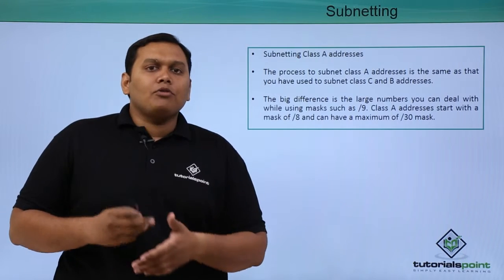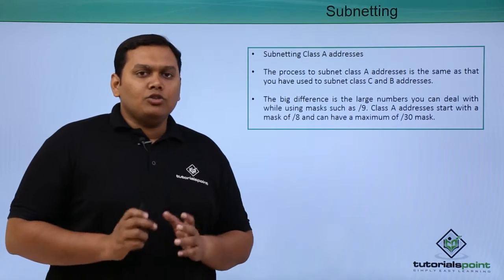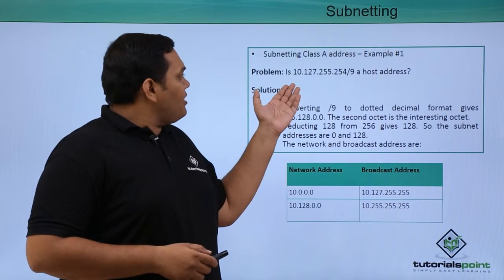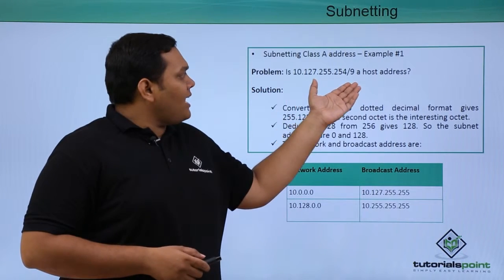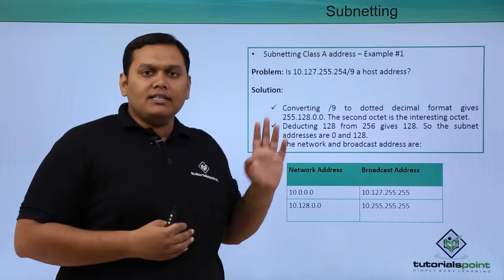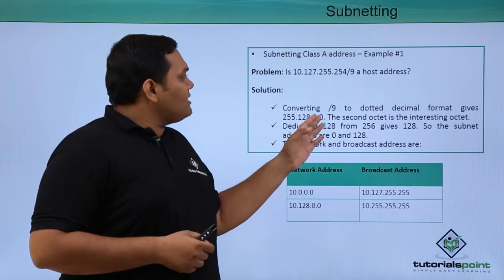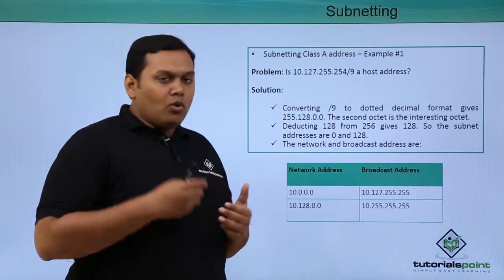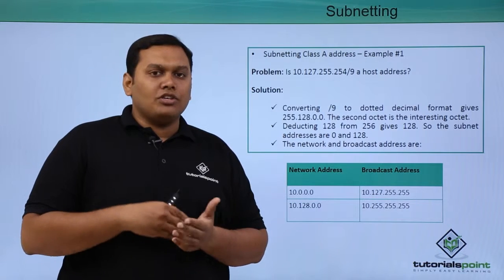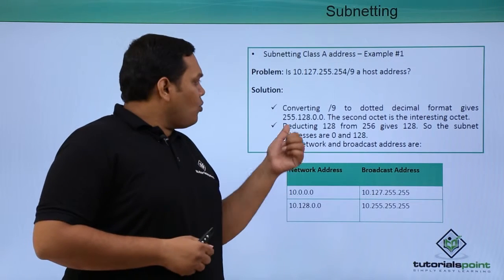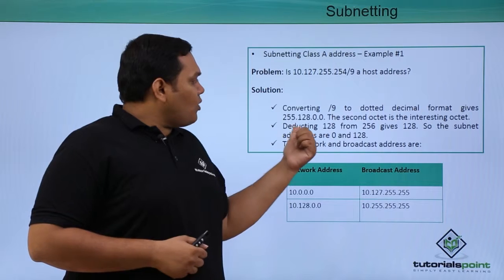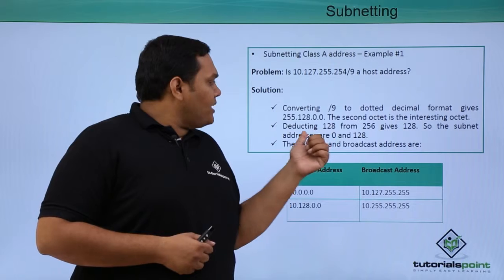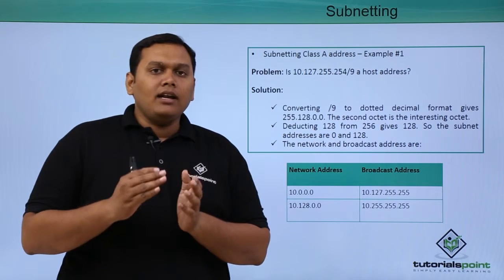You will have more host bits available. Let's see an example. Here you have been given this IP address with /9 as a host address, so we have to subnet this IP address. Converting /9 notation to dotted decimal format gives you 255.128.0.0, so the interesting octet is 128. Subtracting 128 from 256 gives you 128, so the subnet addresses are 0 and 128.